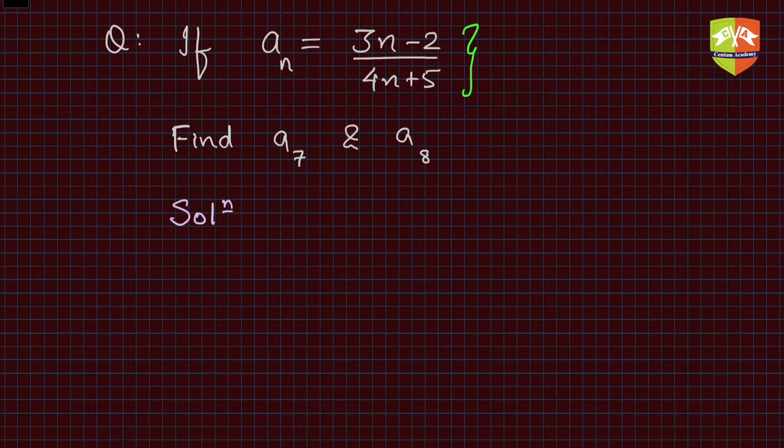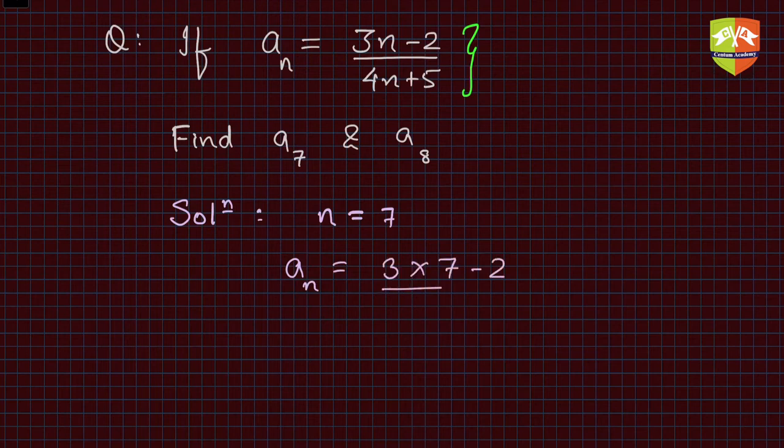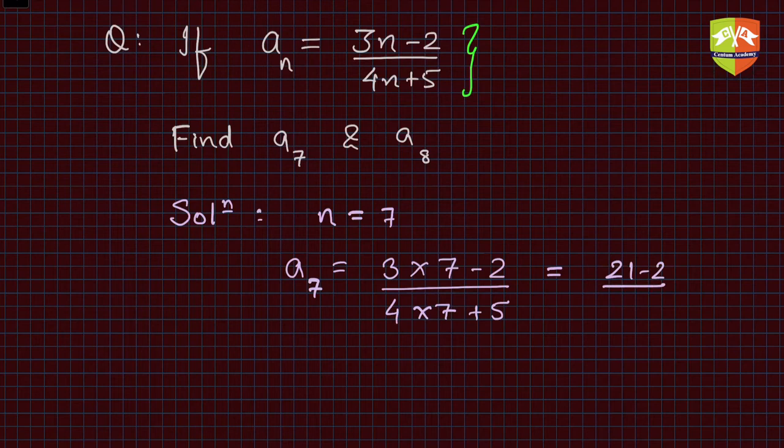Let's find out a7 first. a7 means n equals 7. So if n equals 7, a_n will be equal to 3 times 7 minus 2 divided by 4 times 7 plus 5. What you need to do is just replace n by 7 and you will get a7. So this is a7.